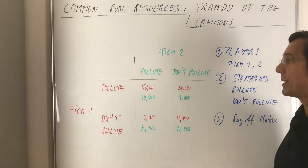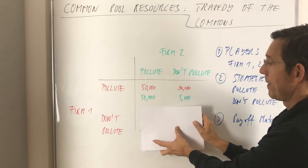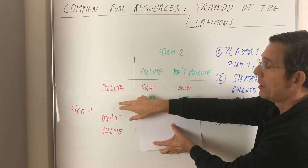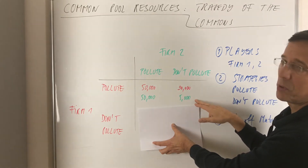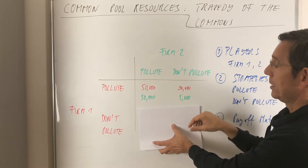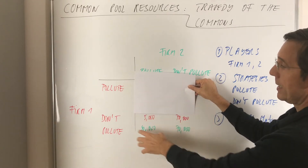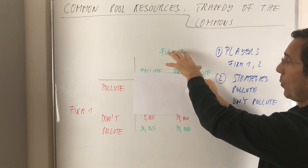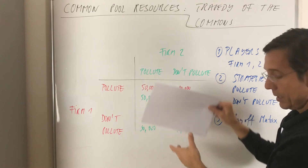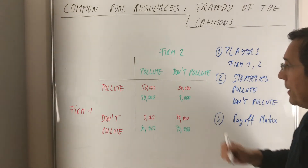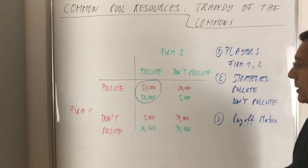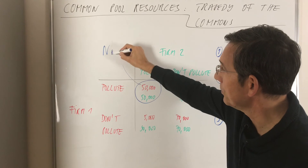Now do the same reasoning for firm 2. The best response of firm 2 in case firm 1 pollutes: don't pollute gives 5,000, pollute gives 50,000 — so the outcome is 50,000. And in case firm 1 doesn't pollute, firm 2's best response is also to pollute, since 90,000 is more than 70,000. So as you can see, given these payoffs, the strategically dominant equilibrium and Nash equilibrium is here — both firms pollute.